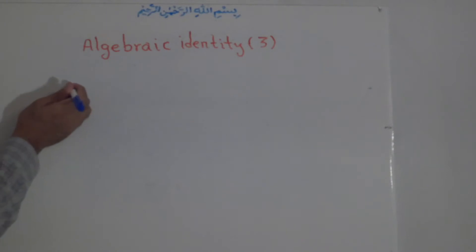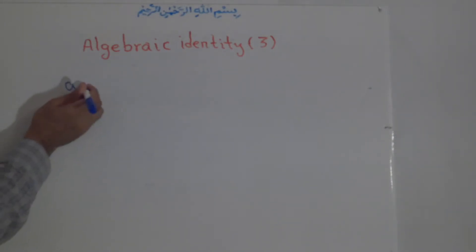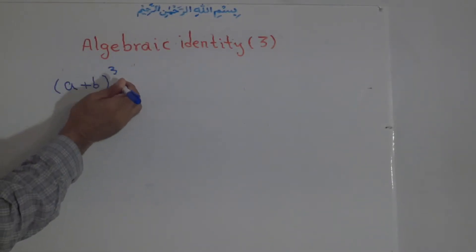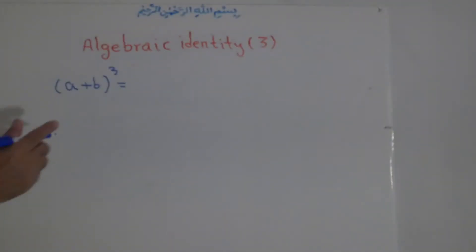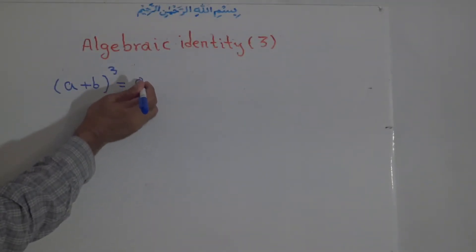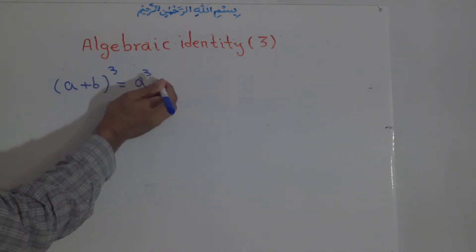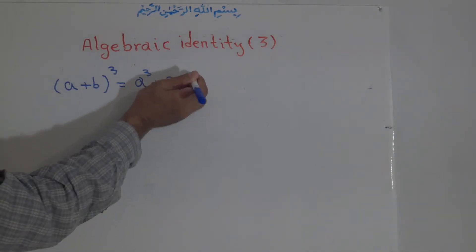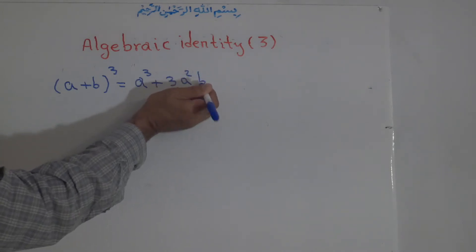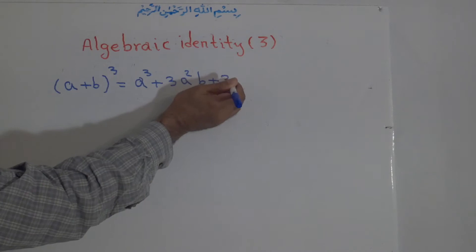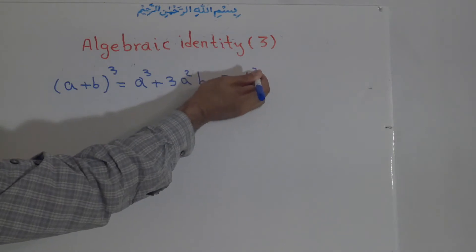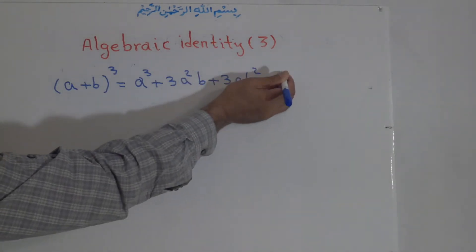There is (a + b) to the power of 3. It equals a to the power of 3, plus 3a squared b, plus 3ab squared, plus b to the power of 3.